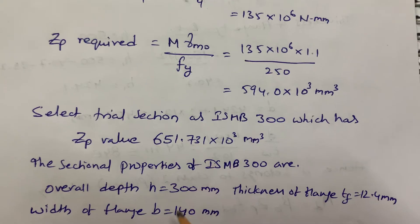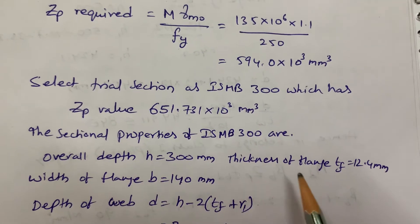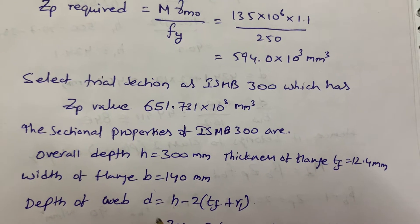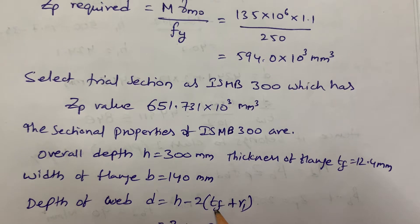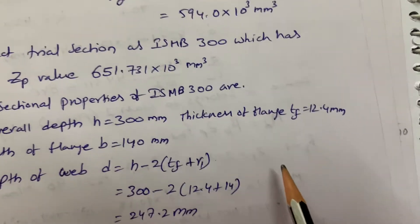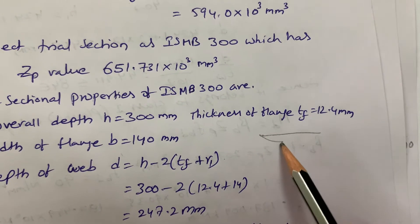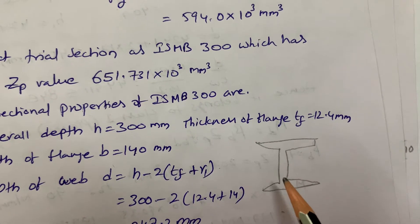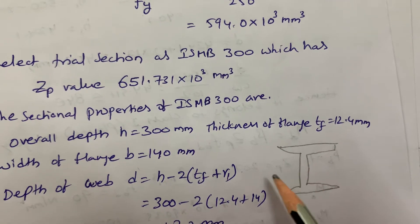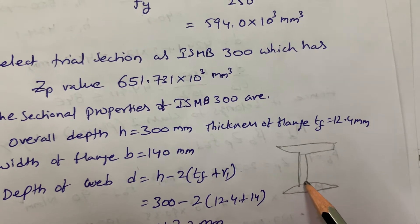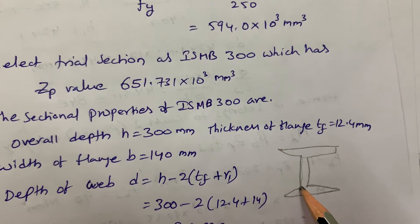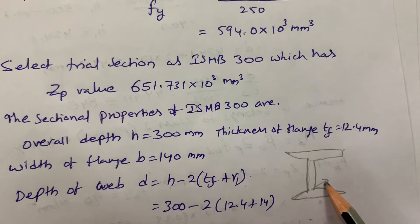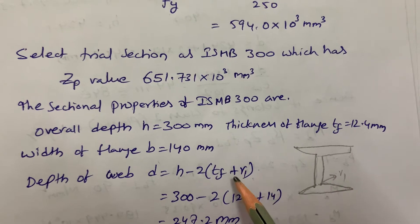For ISMB 300, the sectional properties are: depth = 300 mm, thickness of flange TF = 12.4 mm, width of flange = 140 mm. Next we find the depth of the web using D = H − 2(TF + R1). Our beam is an I-section, and the web is the middle portion. R1 is the root radius — the curved portion between flange and web.